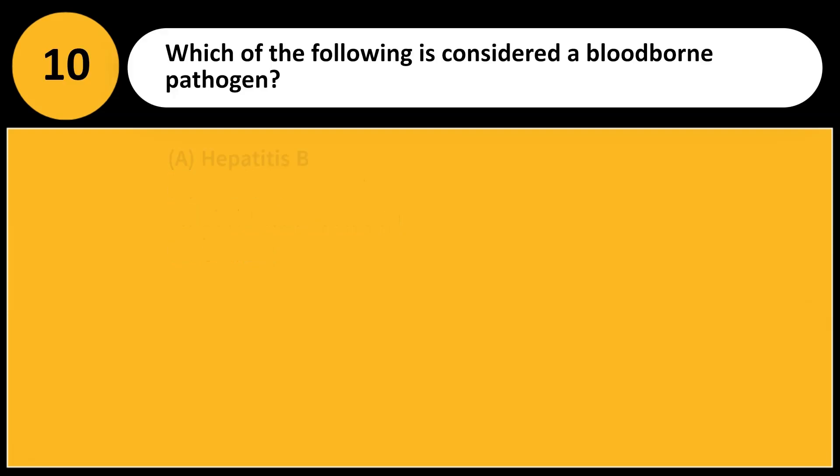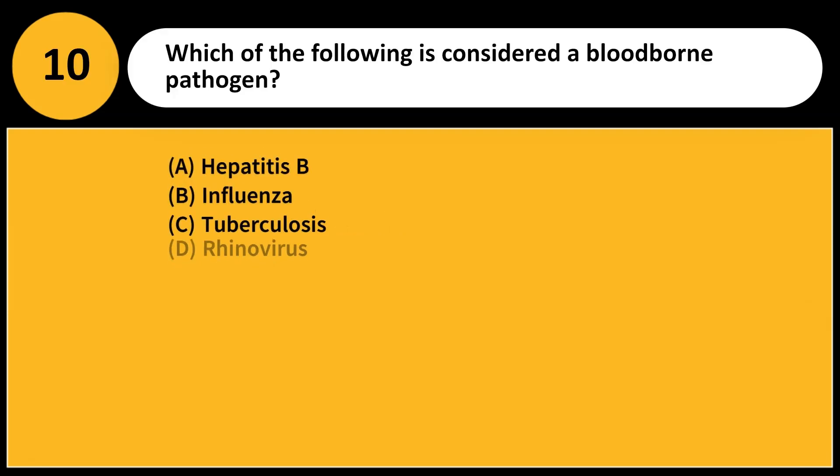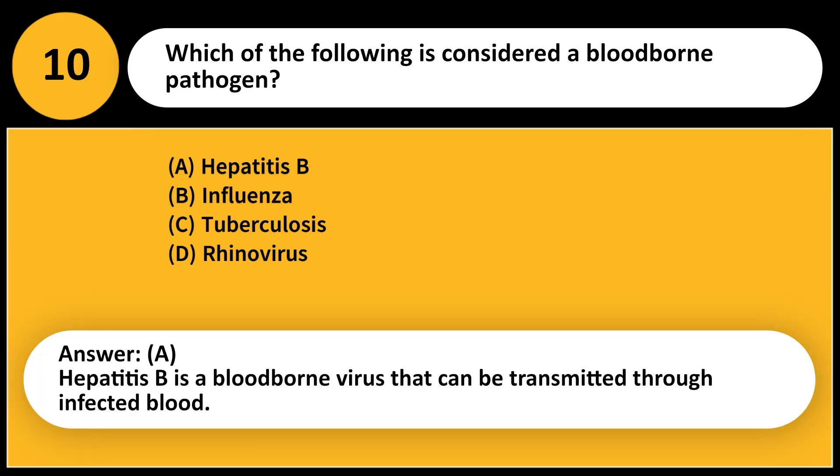Which of the following is considered a blood-borne pathogen? A. Hepatitis B. B. Influenza. C. Tuberculosis. D. Rhinovirus. Answer: A. Hepatitis B is a blood-borne virus that can be transmitted through infected blood.